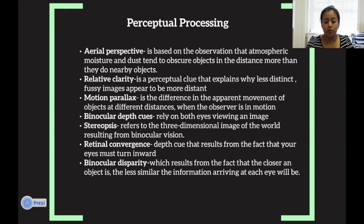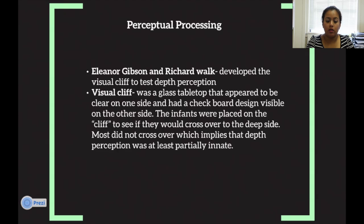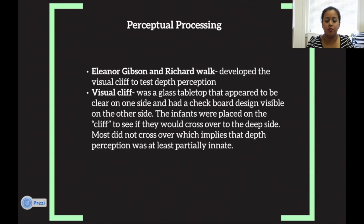Binocular depth cues rely on both eyes viewing an image. Stereopsis refers to a three-dimensional image of the world resulting from binocular vision and convergence — a depth cue that results from the fact that your eyes must turn inward. Binocular disparity results from the fact that the closer an object is, the less similar the information arriving at each eye will be. Eleanor Gibson and Richard Walk developed a visual cliff to test depth perception — a glass tabletop that appeared clear on one side and had a checkerboard design visible on the other. Infants placed on the cliff would not cross over the deep side, implying that depth perception is at least partially innate.